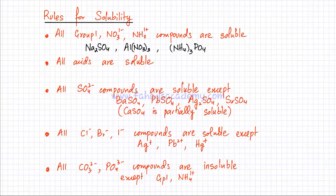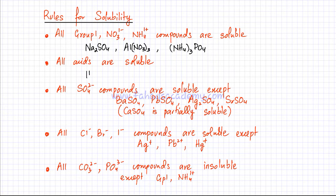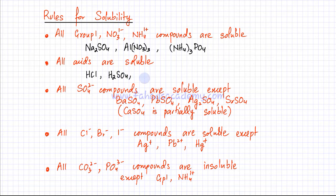Similarly, all acids are also soluble. For example, HCl would be very soluble in water and dissolve to form an aqueous solution. Sulfuric acid, H₂SO₄, is also very soluble. Any acid you have is going to be very soluble in water, it's going to dissociate in aqueous state, and it's going to mix with water.